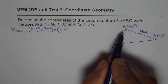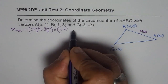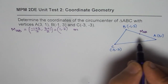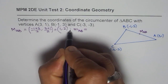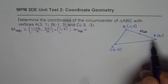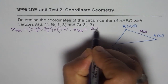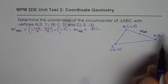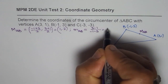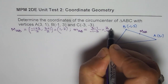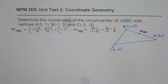Now, what is the slope of AB? The slope of AB — rise over run — is (3 − 1) / (−1 − 3), which is 2 / (−4), giving us −1/2 as the slope of AB.